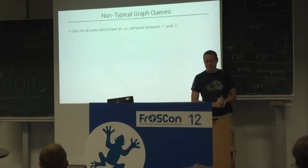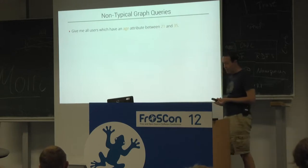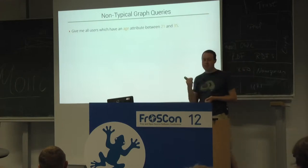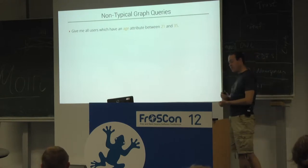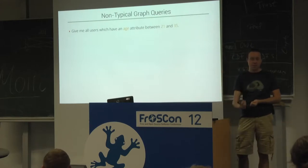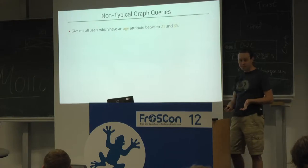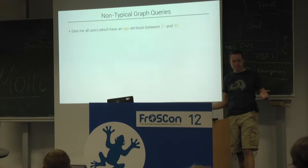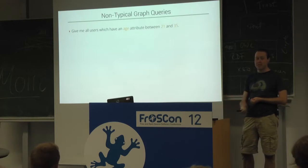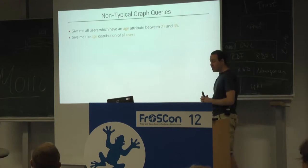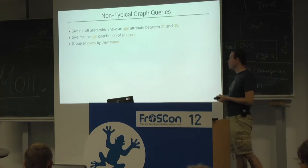What are non-typical graph queries — queries that graph databases could probably find an answer to, but are not optimized for? The short answer is everything that is only based on the attributes on the objects and doesn't care for the relations between them. Graph databases are good when you search alongside the relations, and bad if you just need to look at the objects. Bad queries would be: give me all users with an age attribute between 21 and 35, the age distribution of all users, or group all users by their name — which requires a full table scan.